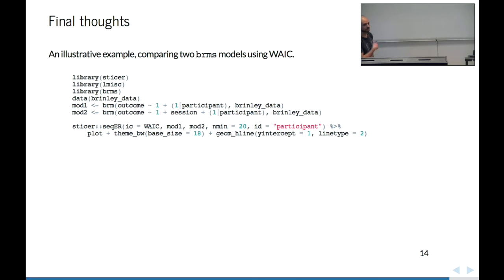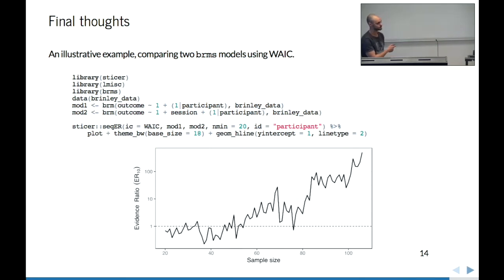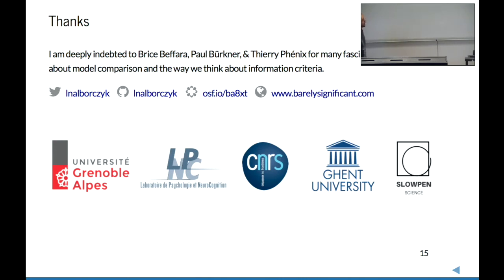I will give a brief example of how you could do sequential testing using information criteria, using the STISO package to compare two BRMS models using the WAIC, which is a generalization of the AIC that can be used to compare Bayesian models. You fit your BRMS models as usual, and then using the seekER function you can choose the information criteria, specifying model one, model two, the sample size at which you want to start sequential testing, and the random effects in your models. You can then plot this to see the evolution of the evidence ratio according to the sample size. That's it — I'm welcoming comments and suggestions for improvement. Thank you.